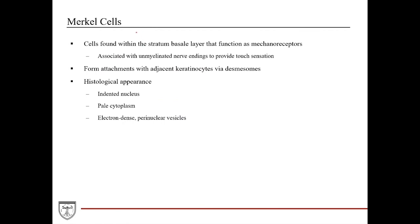Merkel cells, which will be discussed further in the next lecture when covering skin appendages, glands, and receptors, are cells within the stratum basale layer that function as mechanoreceptors — they sense physical touch. They are associated with unmyelinated nerve endings to provide touch sensation, and form attachments with adjacent keratinocytes via desmosomes. Histologically, they have an indented nucleus, a pale cytoplasm, and electron-dense perinuclear vesicles.